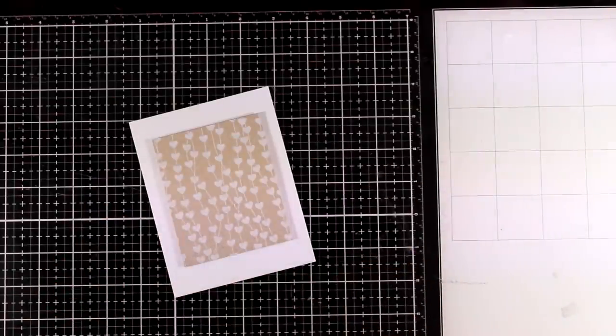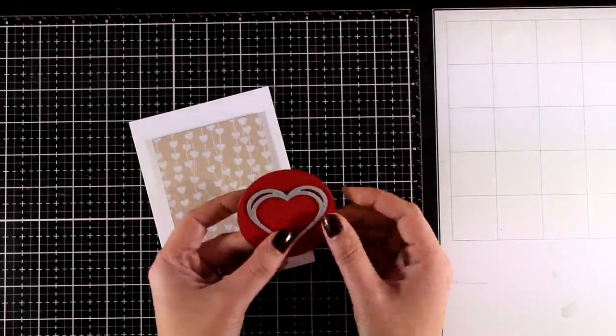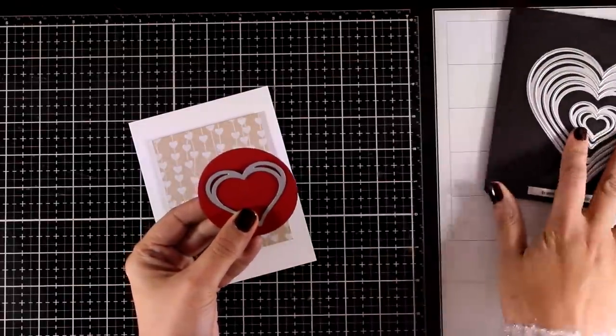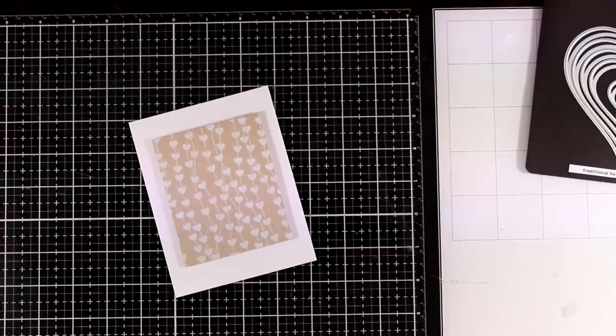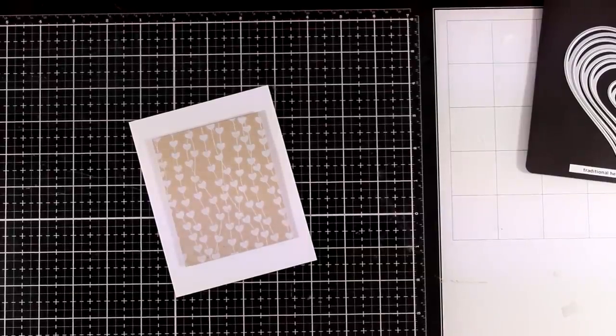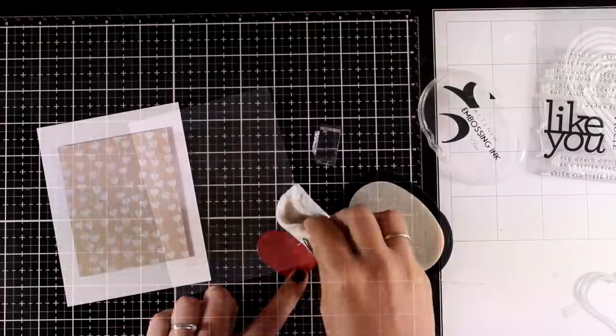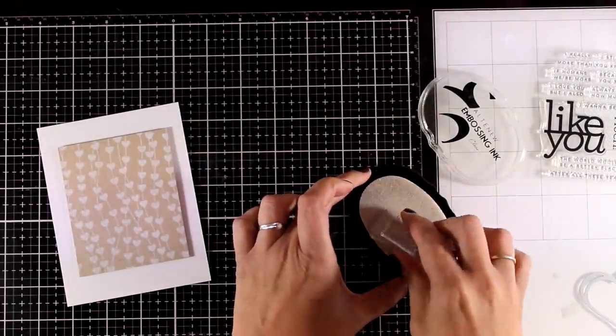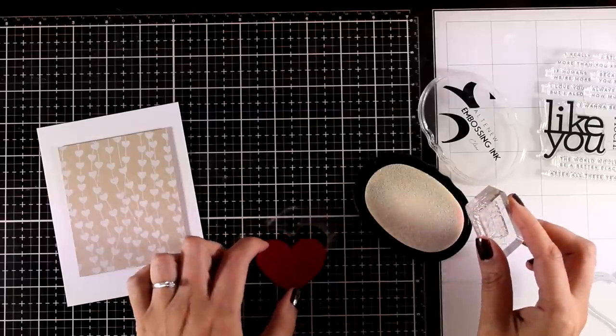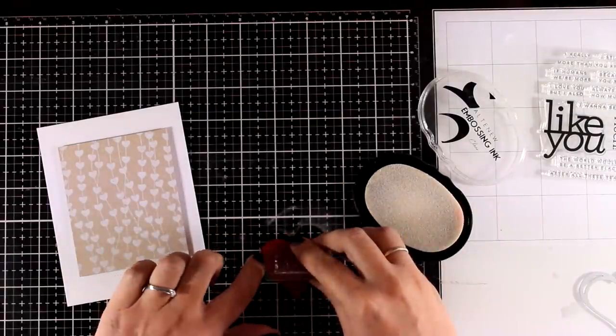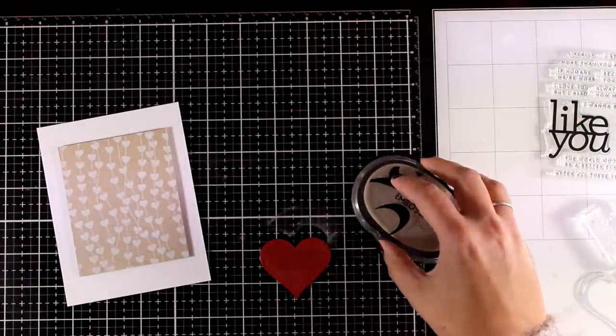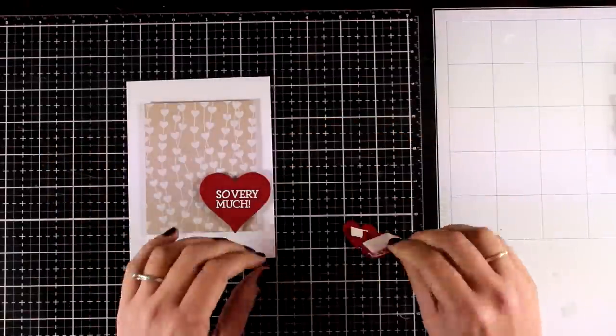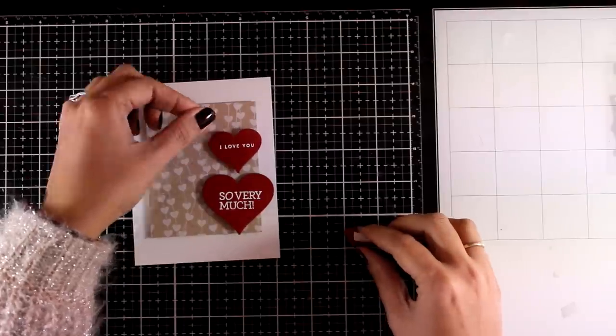And as my focal points I'm going to cut out a few hearts out of red cardstock. The dies that I'm using are from this set. This is the traditional hearts layering basics which I absolutely love. I love the shape of these hearts so I'm going to cut out three of them and on top of them I white embossed my sentiments. On the bigger one I stamped so very much, on the middle one I stamped I love you and I left the smaller one blank and they all come from the I like you words stamp set.